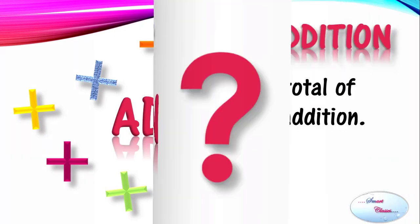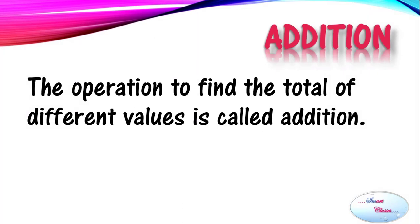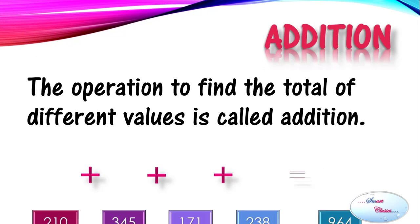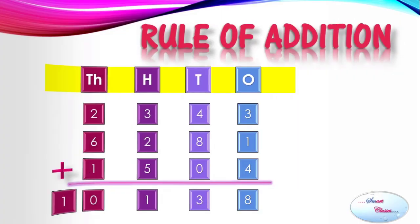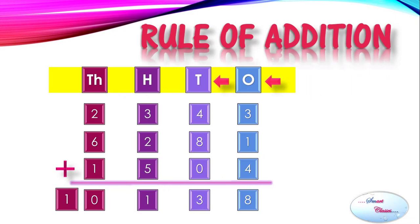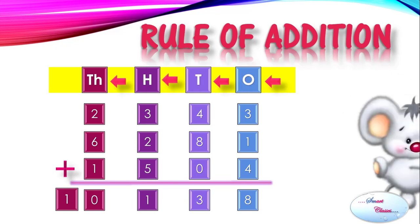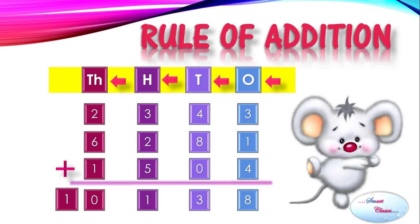The operation to find the total of different values is called addition. There is one basic rule of addition which is very simple: we first add ones, then tens, then hundreds, then thousands, and so on for more digits.